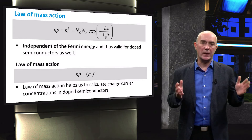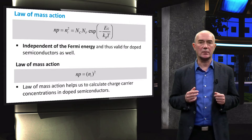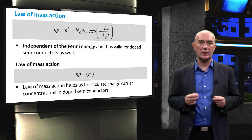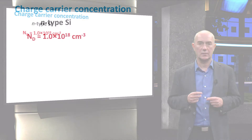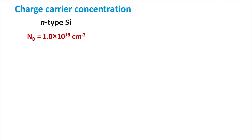Though the values of N and P will change under doping, their product will still be equal to the square of the intrinsic carrier concentration, Ni. Let's work out how to calculate the charge carrier concentration from a given doped concentration. We will use an example of an N-type silicon at room temperature that has a donor concentration of 1×10¹⁸ phosphorous atoms per cubic centimeter.